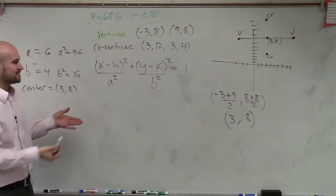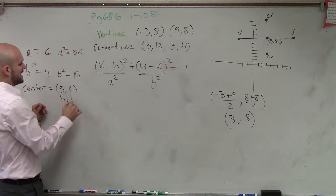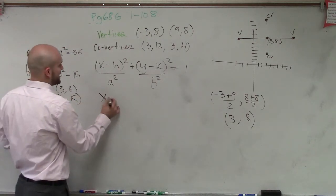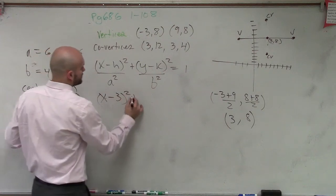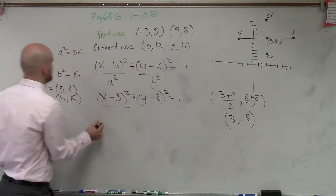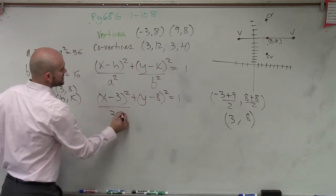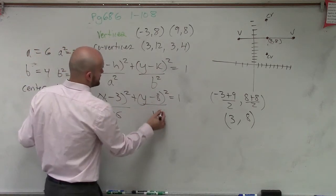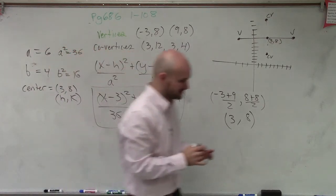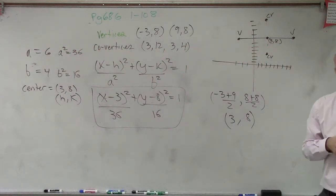Now, let's just plug in the points. Remember, this is your h comma k, right? Center comes in h comma k. So therefore, our formula is x minus 3 squared plus y minus 8 squared equals 1, divided by a squared, which is 36, divided by b squared, which is 16. Done, son.